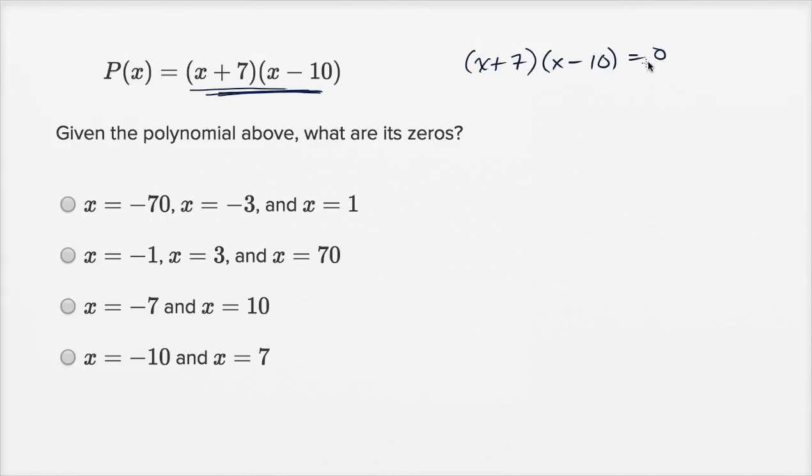Well if I take the product of two things, and if they're going to be equal to zero, I can get zero if one or both of these are equal to zero. Because zero times anything is zero.